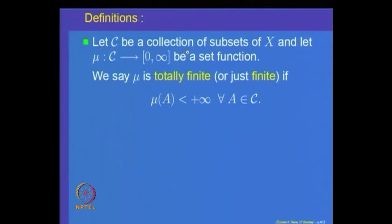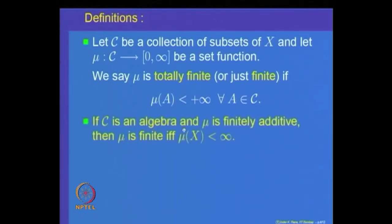A measure mu is called totally finite if mu(A) is finite for every subset A in the domain of mu. We say mu is totally finite — or sometimes we also say it is finite — if mu(A) < +∞ for all A belonging to C. Note that in case C is an algebra and mu is finitely additive, then mu is finite if and only if mu(X) is finite.